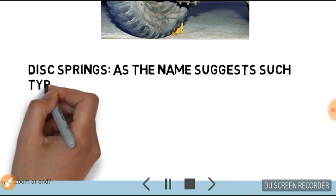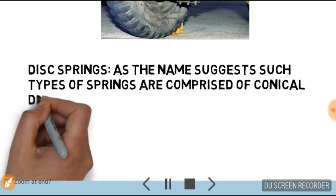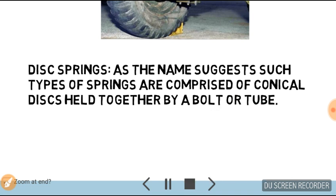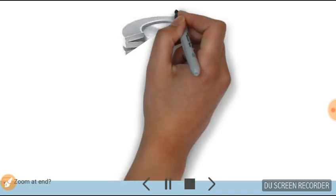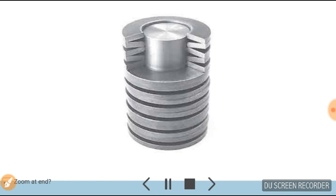Disc springs, as the name suggests, are comprised of conical discs held together by a bolt or tube. This is an example of a disc spring.